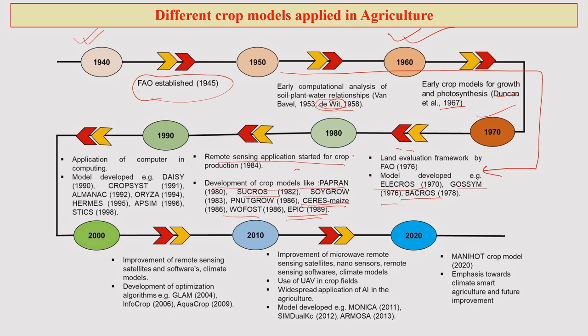These models — PAPRAN, SUCROSE, SOYAGROW, PEANUT GROW, CERES MAIZE, OPHOST, and EPIC — are even today being used. You can see how in every 10 years the field of crop modeling is developing. By 1990, the application of large, smart computers into computing started, and the modeling functionality also got strengthened. Models like DAISY, CROPCYST, ALMANAC, ORIZA, HARMES, APSIM, and STYX came into picture. APSIM and ORIZA are very popular crop models even today, and many of our current models have roots in the models that came into picture in the 1990s.